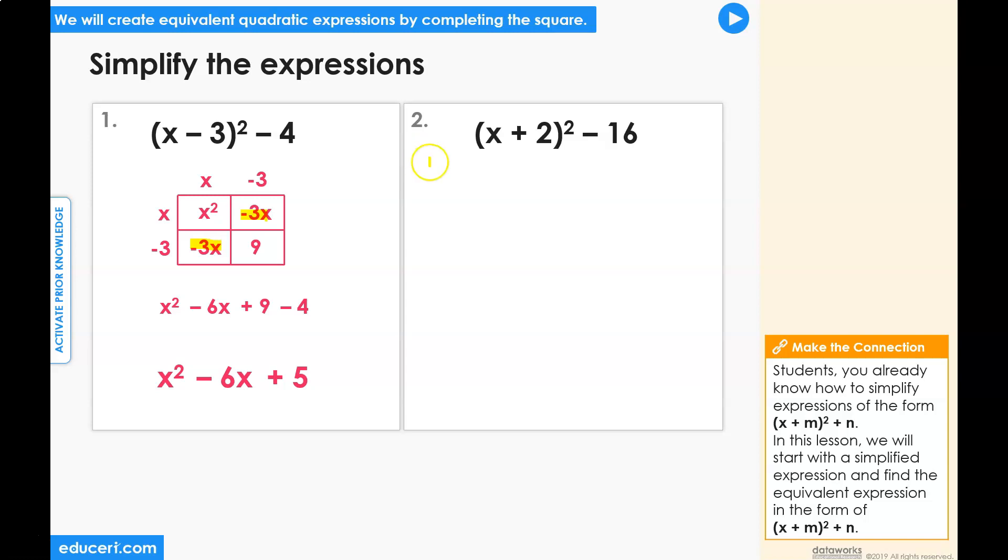Let's check your answer. Starting with the square binomial x plus 2 squared, the box model would have an x and a positive 2 on the rows, and an x and a positive 2 on the columns.